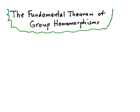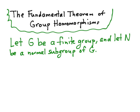Hi everybody. In this video, we're going to use the fundamental theorem of group homomorphisms to work a few examples where we try to build an isomorphism from a quotient group to another group. We'll start with the general theory. So remember, if G is a finite group and N is a normal subgroup of G, we can build the quotient group G mod N. And if we want to build a homomorphism, or even better, an isomorphism, from G mod N to another group H, then we can use the fundamental theorem of group homomorphisms by first defining a map, not from G mod N to H, but from G to H.